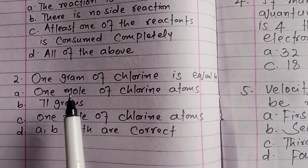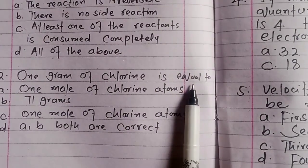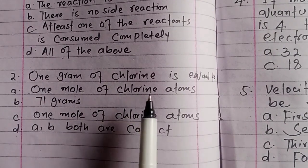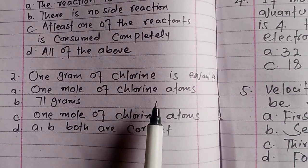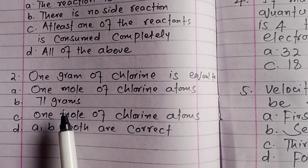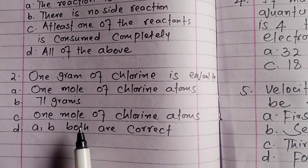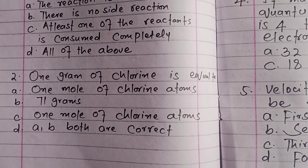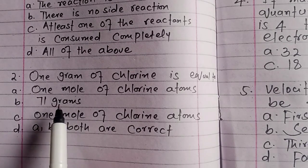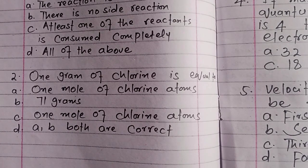Question: One gram of chlorine is equal to one gram of chlorine — is that equal to one mole of chlorine? One mole of chlorine is equal to 71 grams. So the options are: (a) one gram of chlorine equals one mole, or (b) both are correct — meaning one mole of chlorine equals 71 grams. Write your answer in the comments.